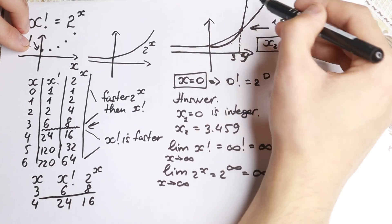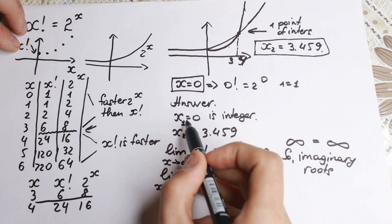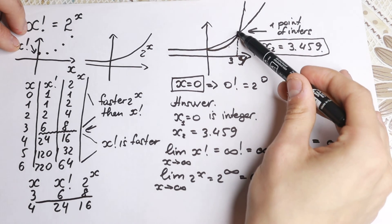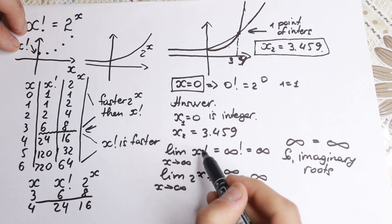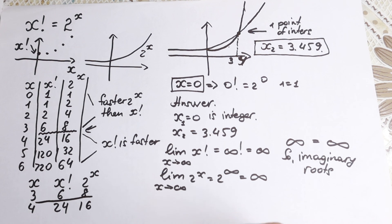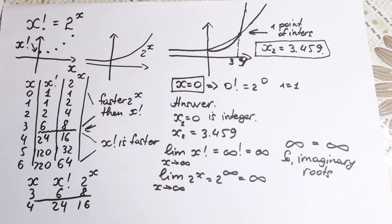So to summarize: when the two lines don't intersect, if we're talking about integers, we have only x equals 0. And between the two graphs, we have x equals approximately 3.459. Thank you so much for watching, for your support and your likes — I really appreciate it. See you in the next videos. Have a great day!